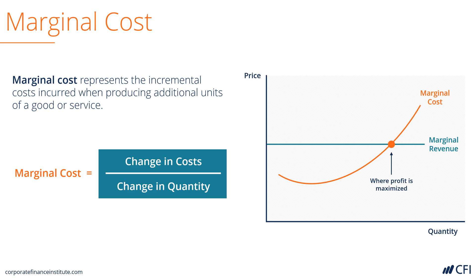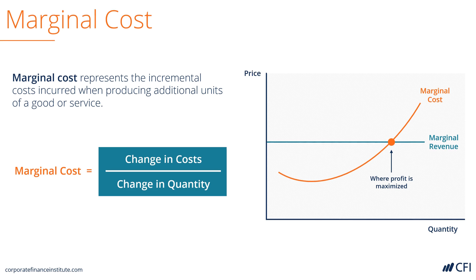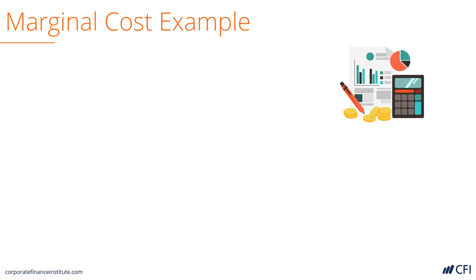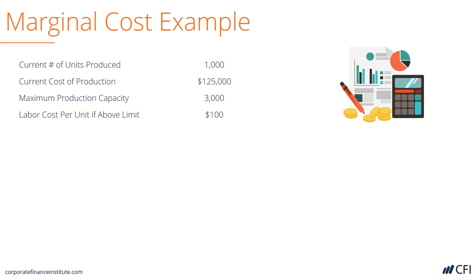Let's look at an example together of how to calculate the marginal cost of production. Imagine a firm with the following information: it currently produces 1,000 units, and the cost of production is $125,000 for all of those 1,000 units.